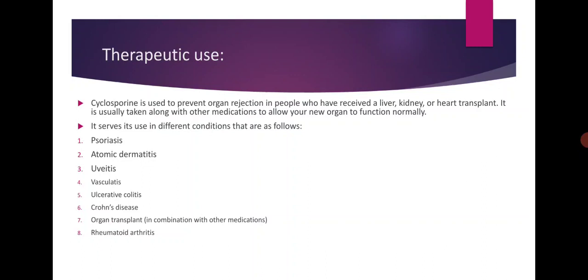Cyclosporine is used to prevent organ rejection in people who have received a liver, kidney, or heart transplant, and is usually taken along with other medications to allow the new organ to function normally. It is also used for psoriasis, atopic dermatitis, uveitis, vasculitis, ulcerative colitis, Crohn's disease, organ transplant — always in combination with other medications — and rheumatoid arthritis.